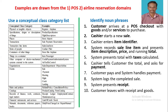The next category is events. For POS it is sale, payment, and meeting. For airline reservation it is flight, crash, and landing. The next category is rules and policies. For POS it is refund policy, and for the airline reservation system it is cancellation policy.